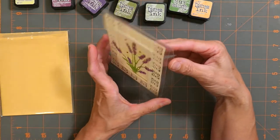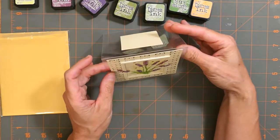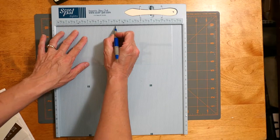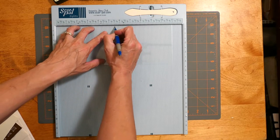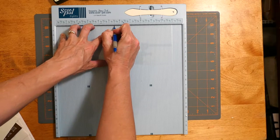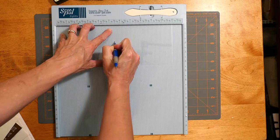Working with acetate is not hard at all. In fact, it scores very nicely. I use the Heartfelt Creations clear cardstock just because it's very thick and I didn't have to worry about my scoring tool going through it. It's very tough stuff.